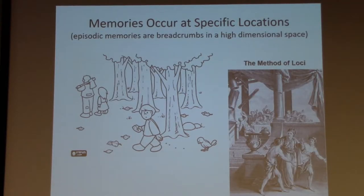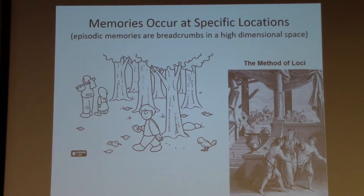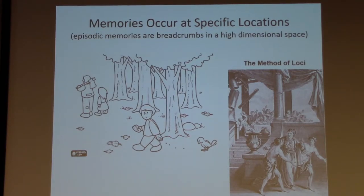One of the classic mnemonic techniques is the method of loci: if you know some spatial arrangement of things, you can associate elements in that arrangement with something you're trying to remember. The method comes from a banquet for the Greek poet Simonides. He was called away, and an earthquake crushed and killed everyone there, their bodies mangled beyond recognition. When he returned, he remembered the arrangement of where people were sitting — knowing which mangled body was whose by their position. That's where the method of loci comes from. Spatial positions are a powerful memory cue.